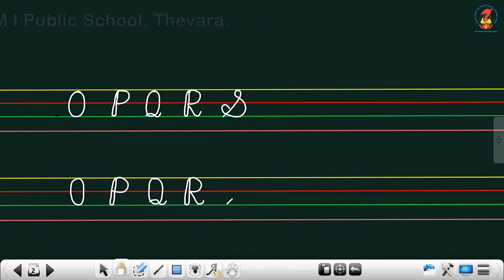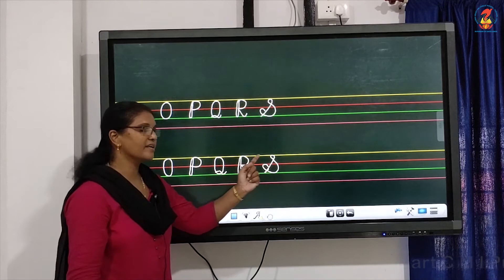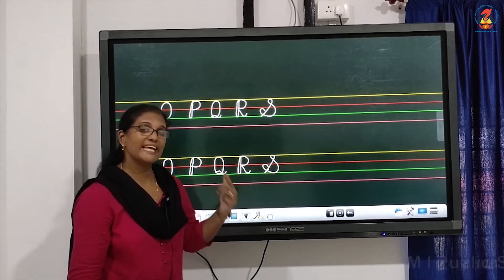So let's do it again my dear ones. Start on the third line, go up to the first line, take a small curve. Then a big one between second and third line, take a curve and end it up on the slanting line where you started. What is the next letter? O, P, Q, R, S.